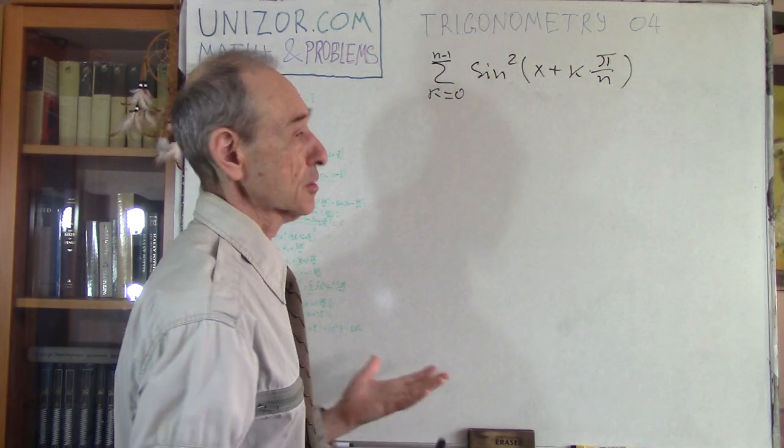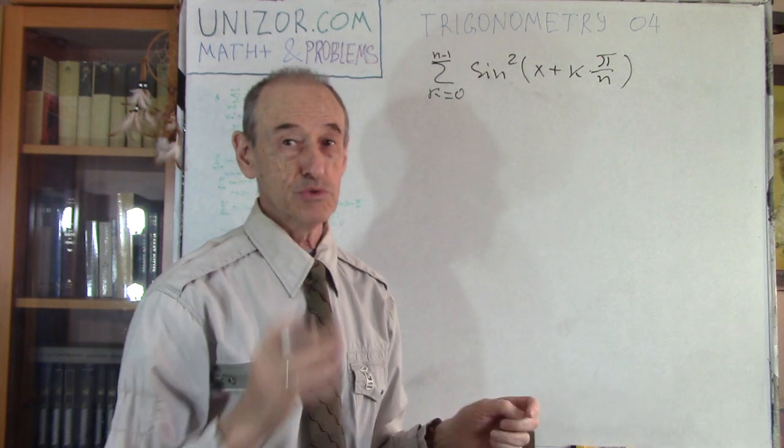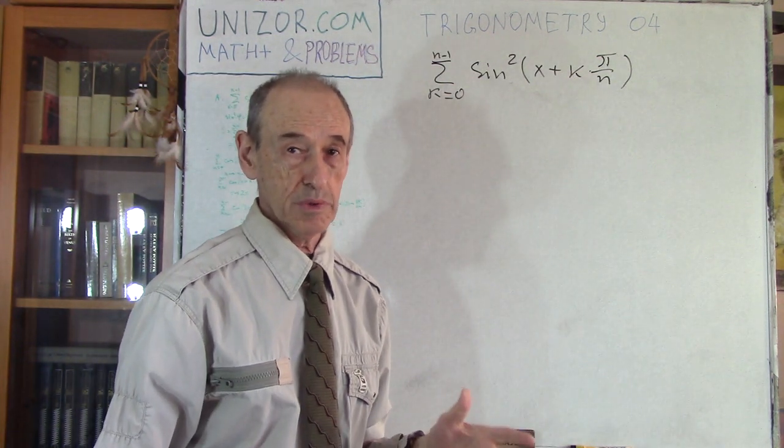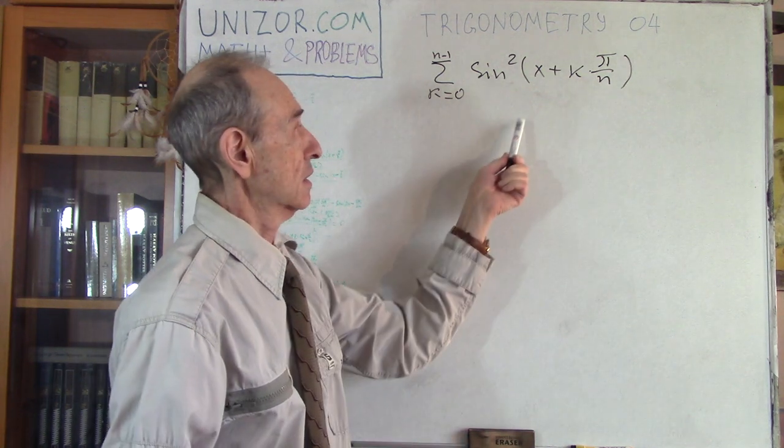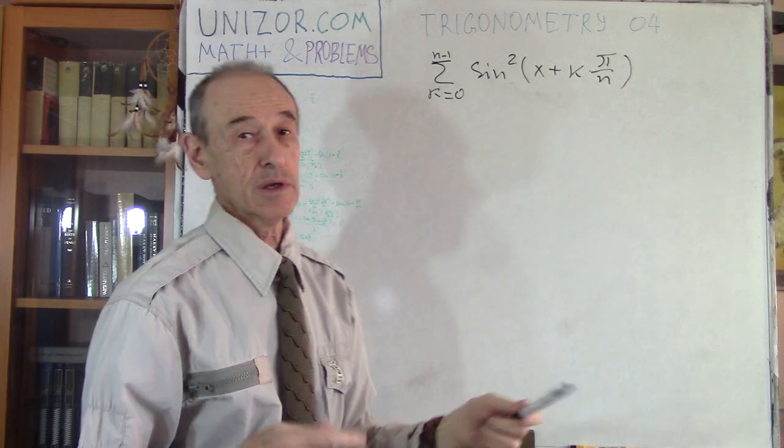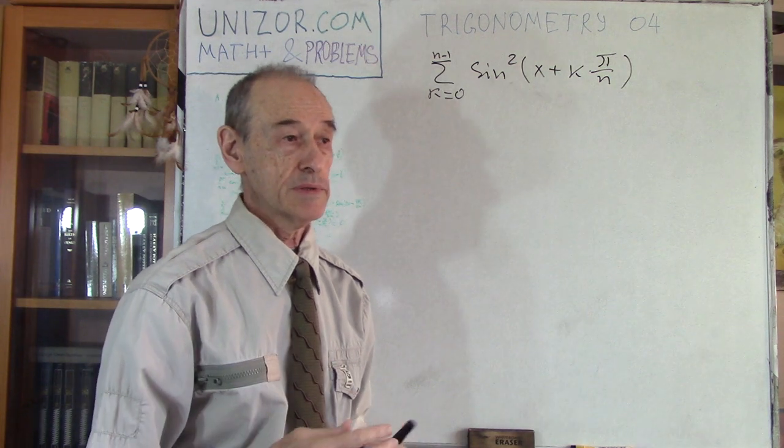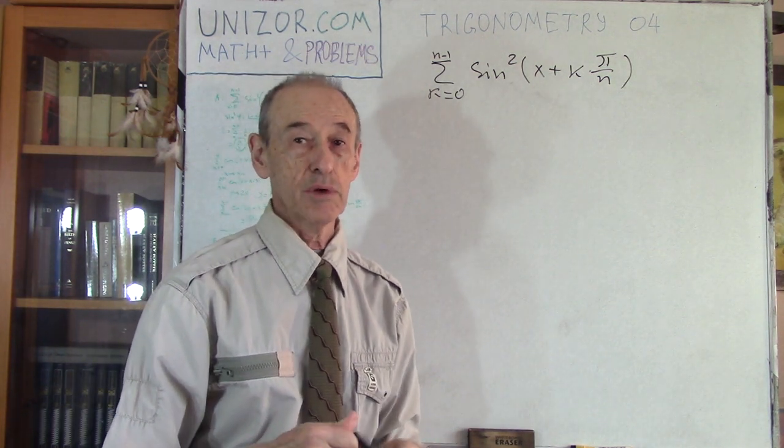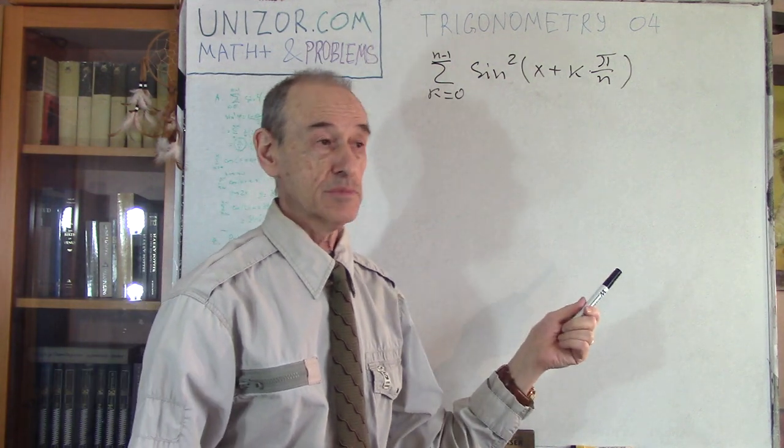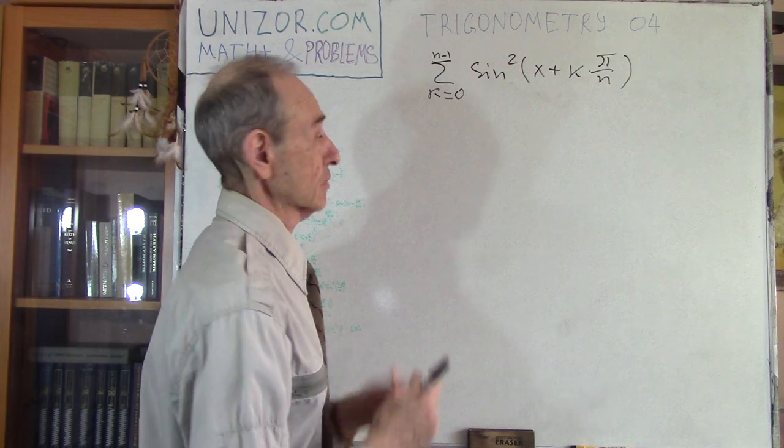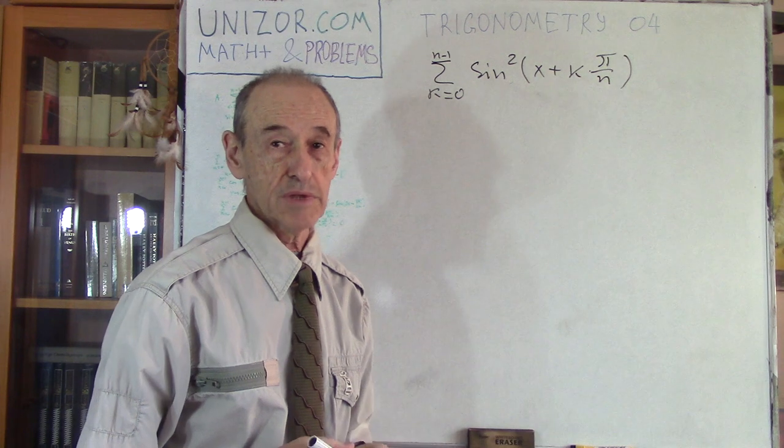Okay, so how can I approach it? Well, as usually, when I present the problem, it makes sense for you to pause the video and think about this problem yourself. Well, as a hint, I might actually tell you that first I will convert sine squared into cosine of a double angle, and then I will use the results of the previous lecture, where I calculated the sum of cosines. So this is my plan. Okay, so now let's just proceed. First of all, how to convert sine squared into cosine of double angle?